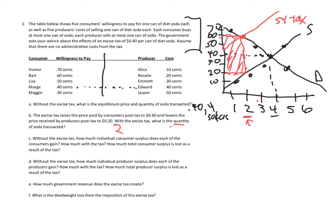Without the tax, how much individual surplus does each consumer gain? Going back to the schedule: Homer pays 40 cents but was willing to pay 70, so he has 30 cents of surplus. Bart was willing to pay 60 and got the good for 40, so he has 20 cents. Lisa has 10 cents of surplus. And Marge, who is willing to pay 40 and pays 40, has zero. The total consumer surplus is 60 cents.